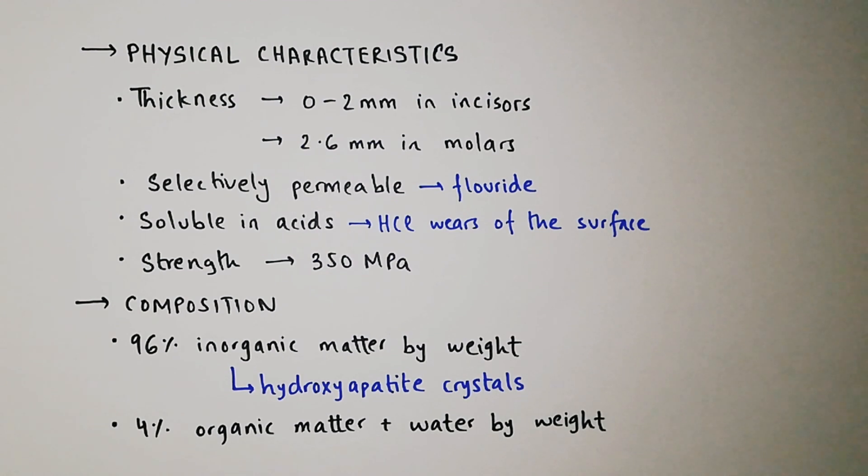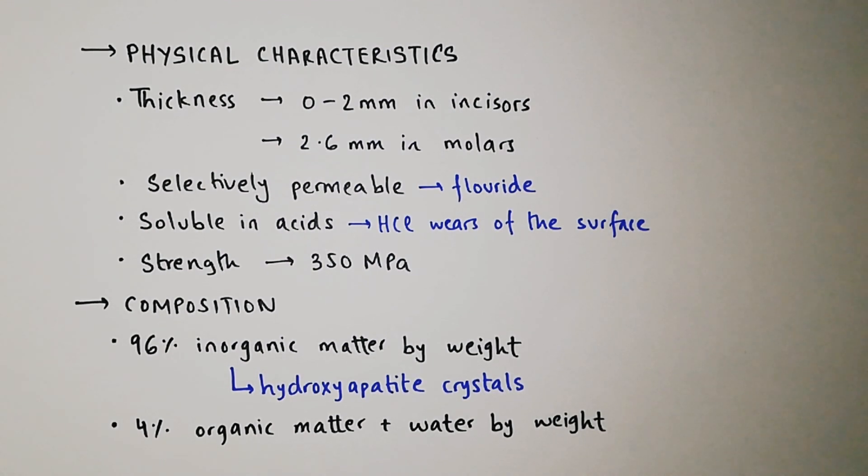Now we come to the physical characteristics of enamel. The thickness of enamel is 2 mm in incisors and 2.6 mm in molars. The cervical region is the thinnest region of the enamel, and the occlusal surface of the molars is the thickest region.